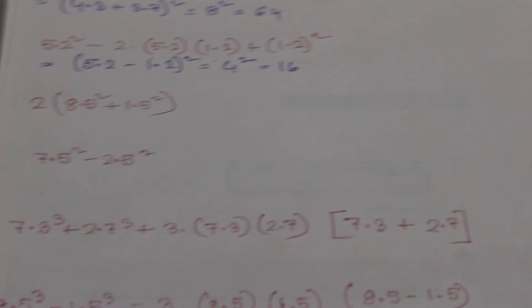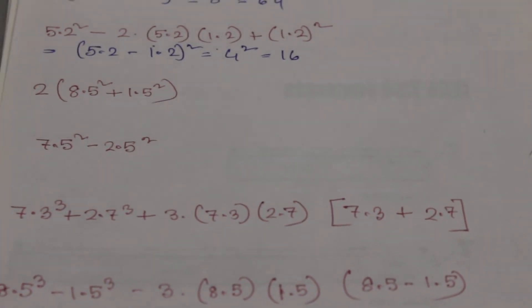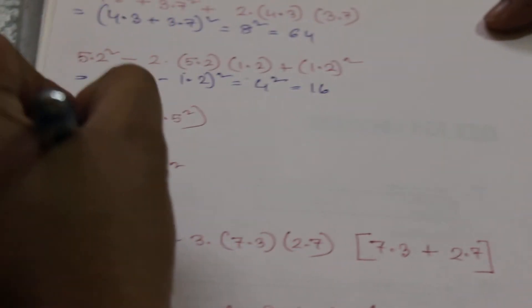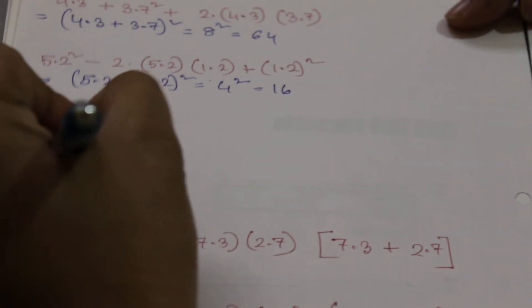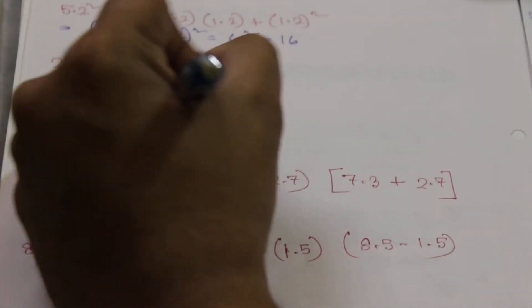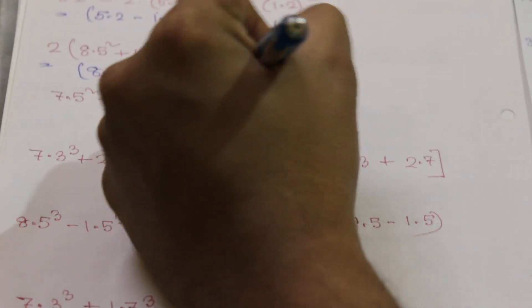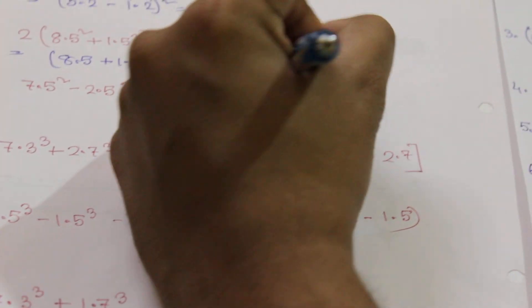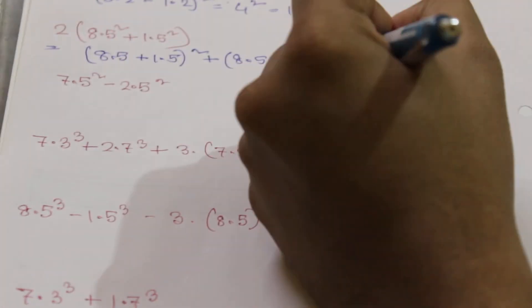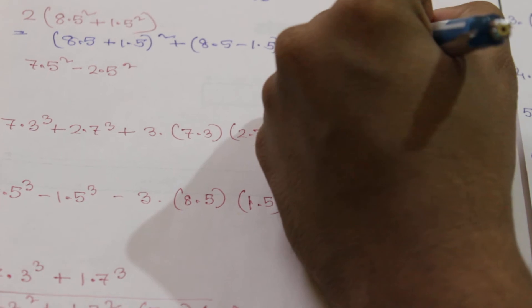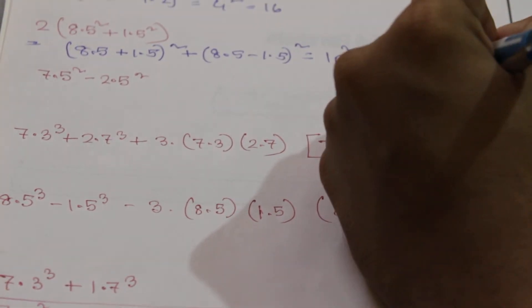The next one is 2 into (8.5 square plus 1.5 square). This matches the third formula, so we use: (8.5 + 1.5) whole square plus (8.5 - 1.5) whole square, which equals 10 square plus 7 square.